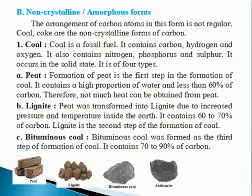Peat was transformed into lignite due to increased pressure and temperature inside the earth. Lignite is the second step of formation of coal. It contains 60–70% of carbon.